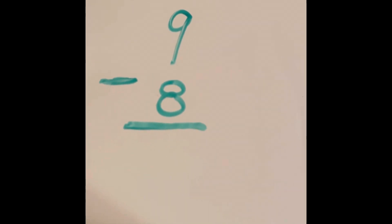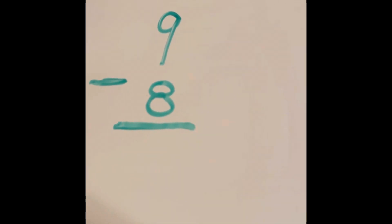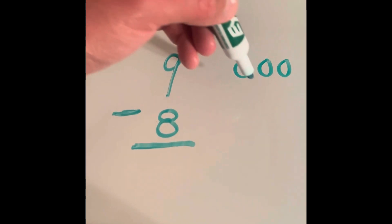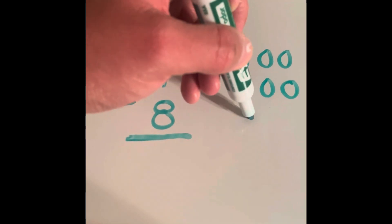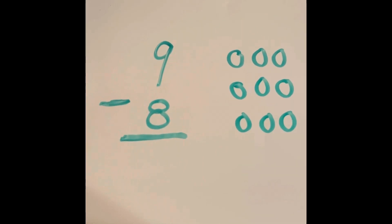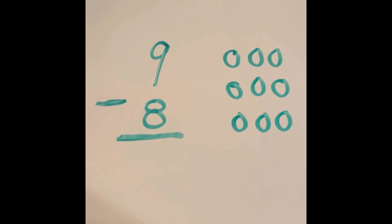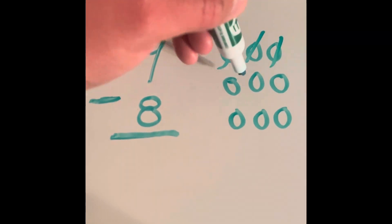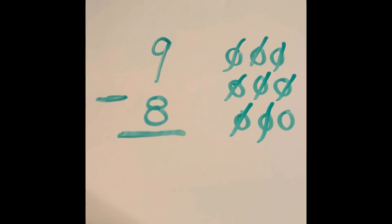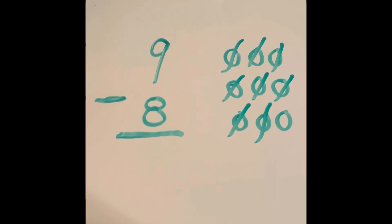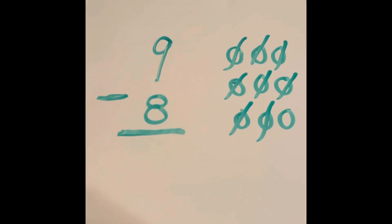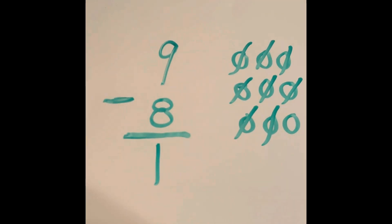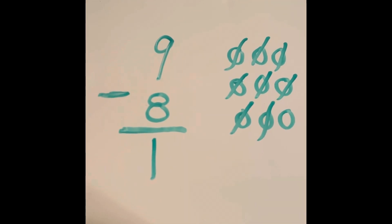Example number five: nine minus eight. I'm going to make nine total circles and cross out eight of them. Drawing: one, two, three, four, five, six, seven, eight, nine. Now crossing out eight: one, two, three, four, five, six, seven, eight. I just crossed out eight out of the nine circles. Counting circles not crossed out — there's only one circle not crossed out. Nine minus eight equals one.